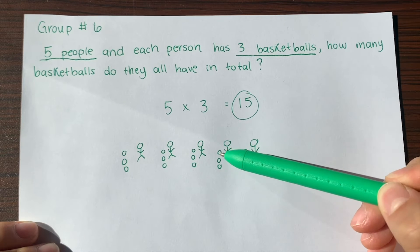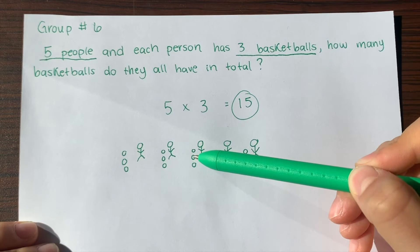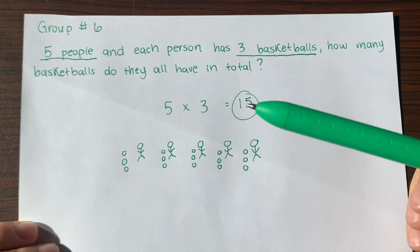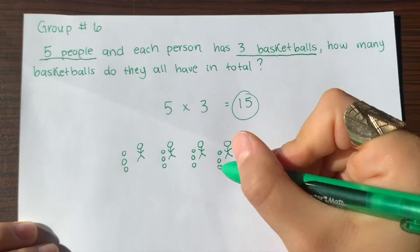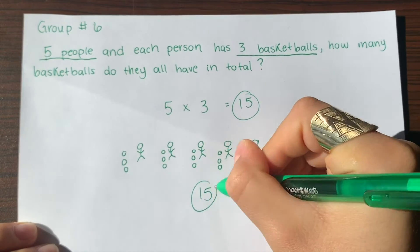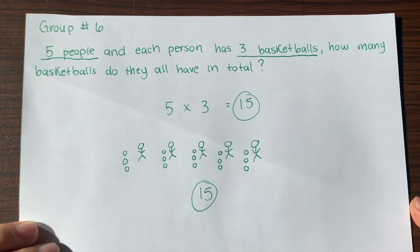So 1, 2, 3, 4, 5, 6, 7, 8, 9, 10, 11, 12, 13, 14, 15. Fifteen basketballs in total and that would give you your answer.